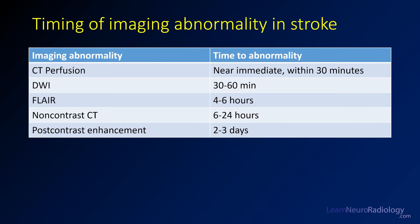Regarding timing of imaging abnormalities: CT perfusion becomes abnormal almost immediately — within just a few minutes, and definitely within 30 minutes. Diffusion starts to be abnormal within about 30 to 60 minutes. FLAIR and non-contrast CT are later — FLAIR starts becoming abnormal in the four to six hour timeframe, and non-contrast CT in the six to 24 hour window. Infarcts will start to develop post-contrast enhancement in the two to three day timeframe. These timing differences are tools to estimate how long ischemia has been going on.